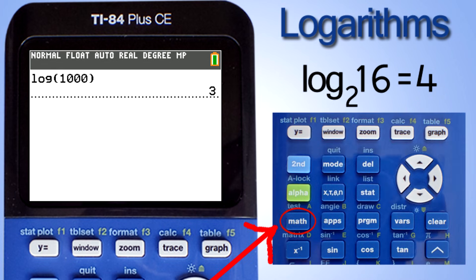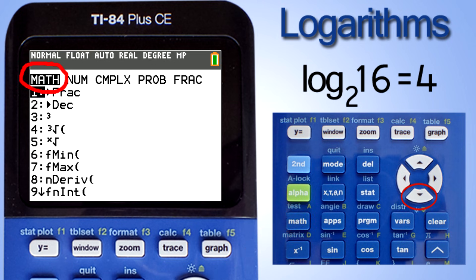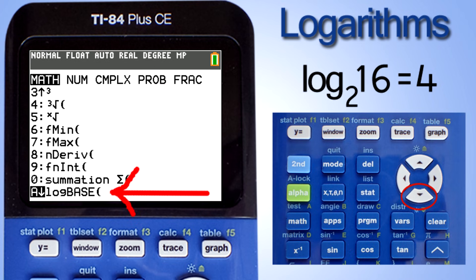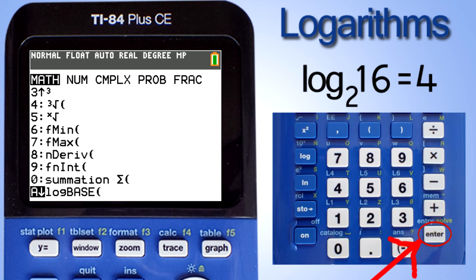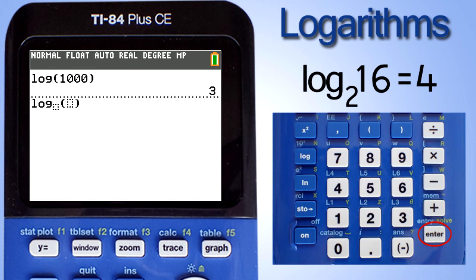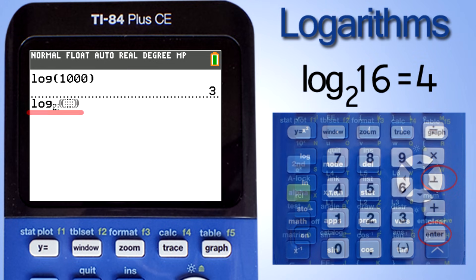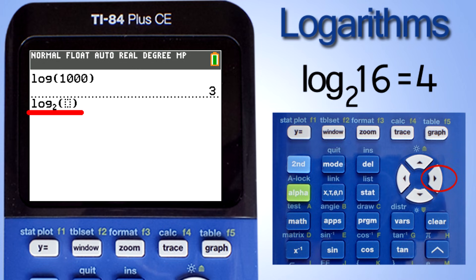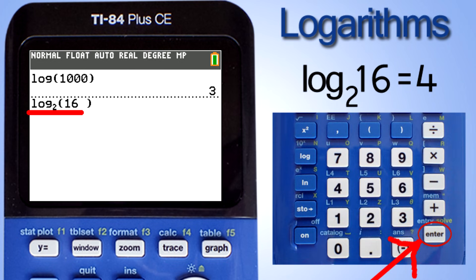On the calculator press the math key here. Stay in this column, math. Move down with the down arrow key to here. Log base. Press enter key. This screen pops up. Enter the base. In this case it is base 2. Press the right arrow key until you get inside the parenthesis. Enter 16. Press enter to get the answer. And there to the right is the answer, 4.